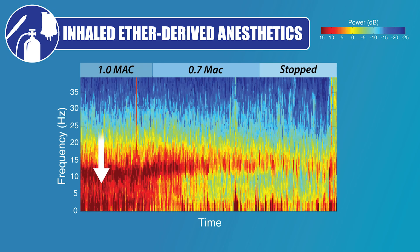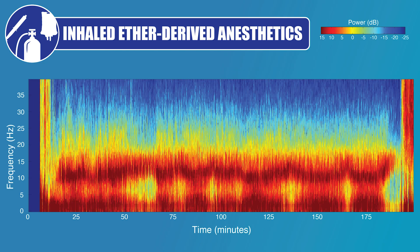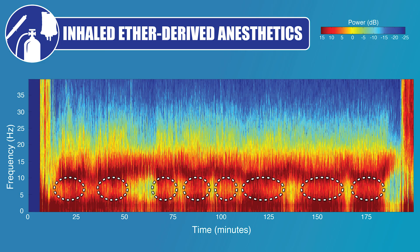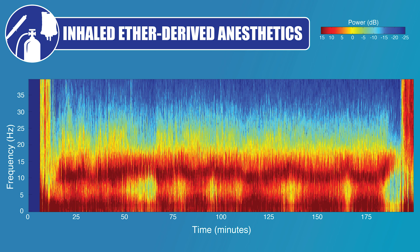The theta oscillations are typically the first pattern to dissipate when the concentration of the ether-derived anesthetics is decreased, such as during emergence. Consider this EEG spectrogram from a case where sevoflurane was being administered and the concentration was frequently adjusted over the course of time. We observe the theta oscillations appearing and dissipating as the concentration is changed from sub-MAC levels to above-MAC levels.